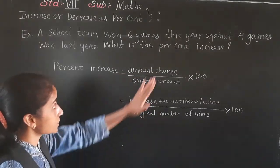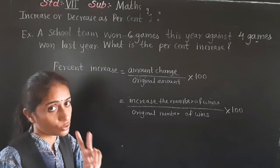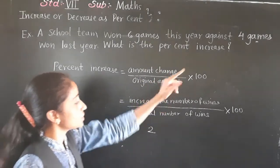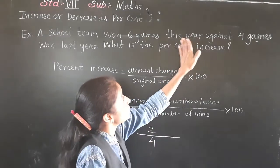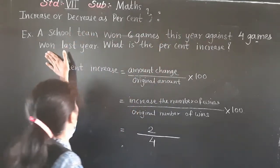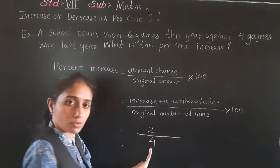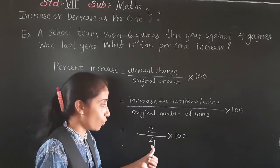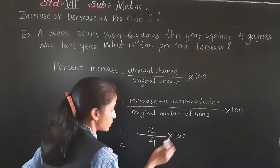Now how much did the number of wins increase? Last year 4 games were won, and this year 6 games. So how much did the number of wins increase? By 2. And the original number of wins? 4. So multiply by 100.